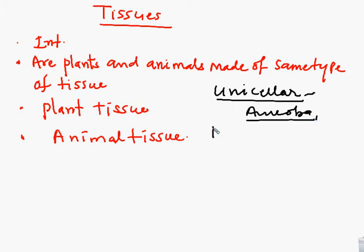In multicellular organisms, the body contains many cells — millions of cells. In multicellular organisms, the diffusion process is insufficient. Because of that, there is a concept of division of labor.